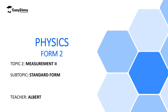Welcome to Easy Elimu Learning Simplified. In the previous lesson we discussed significant figures. Now in this lesson we are going to discuss standard form. We are going to realize that in standard form we write very large numbers or very small numbers such that an integer appears before a decimal point. The common format is a times 10 raised to power n, where a is between 1 and 10, and the index n is an integer. My name is Albert.